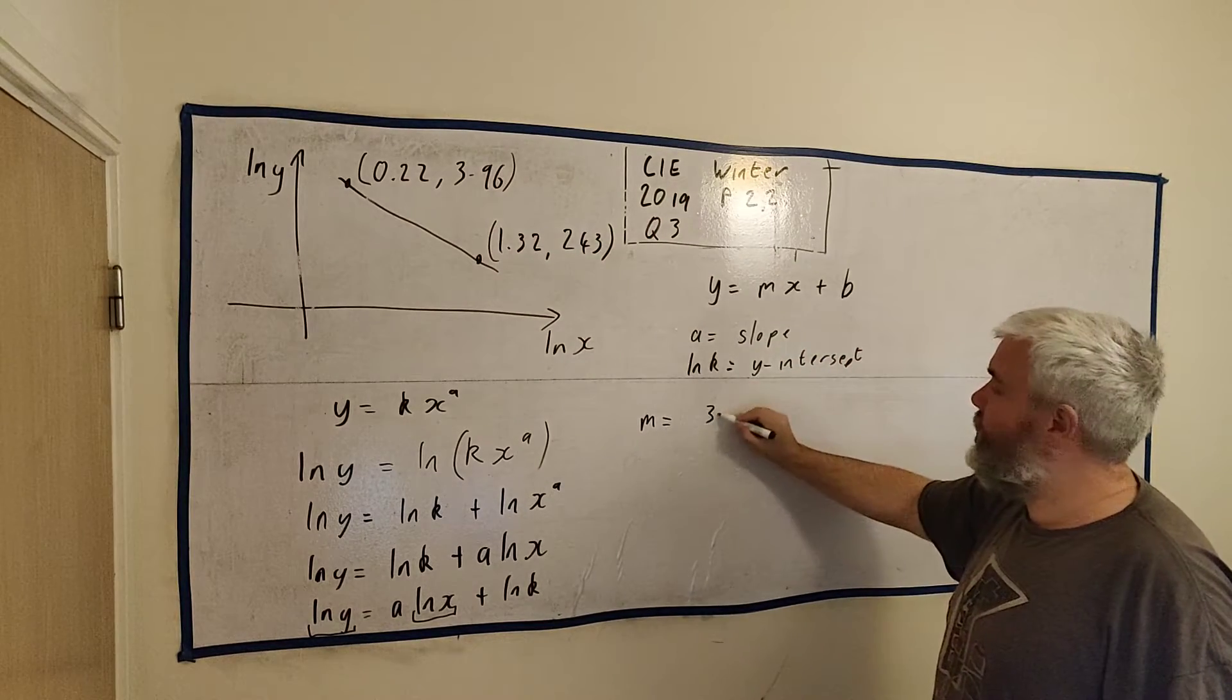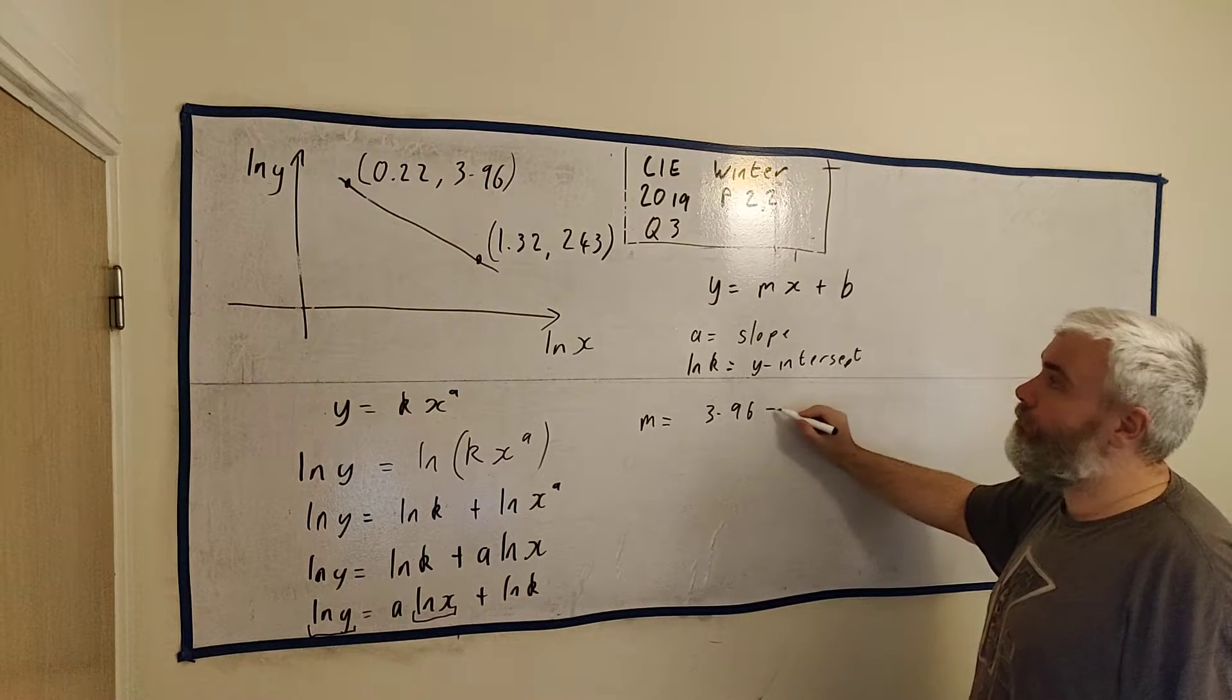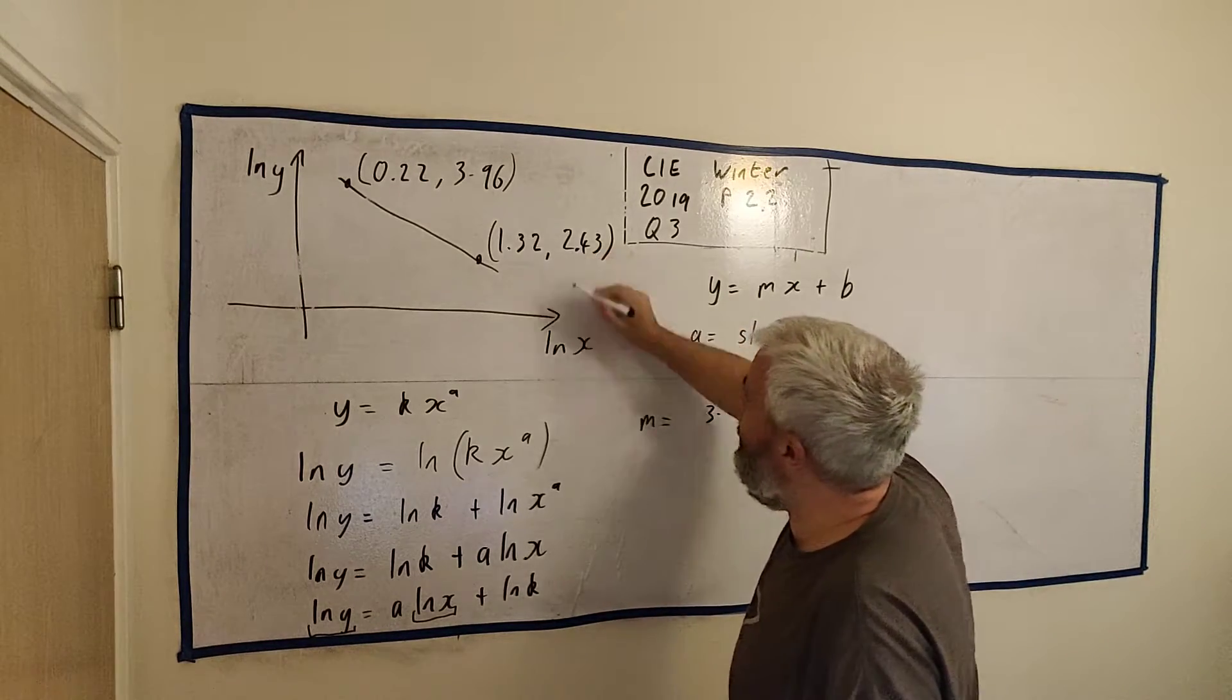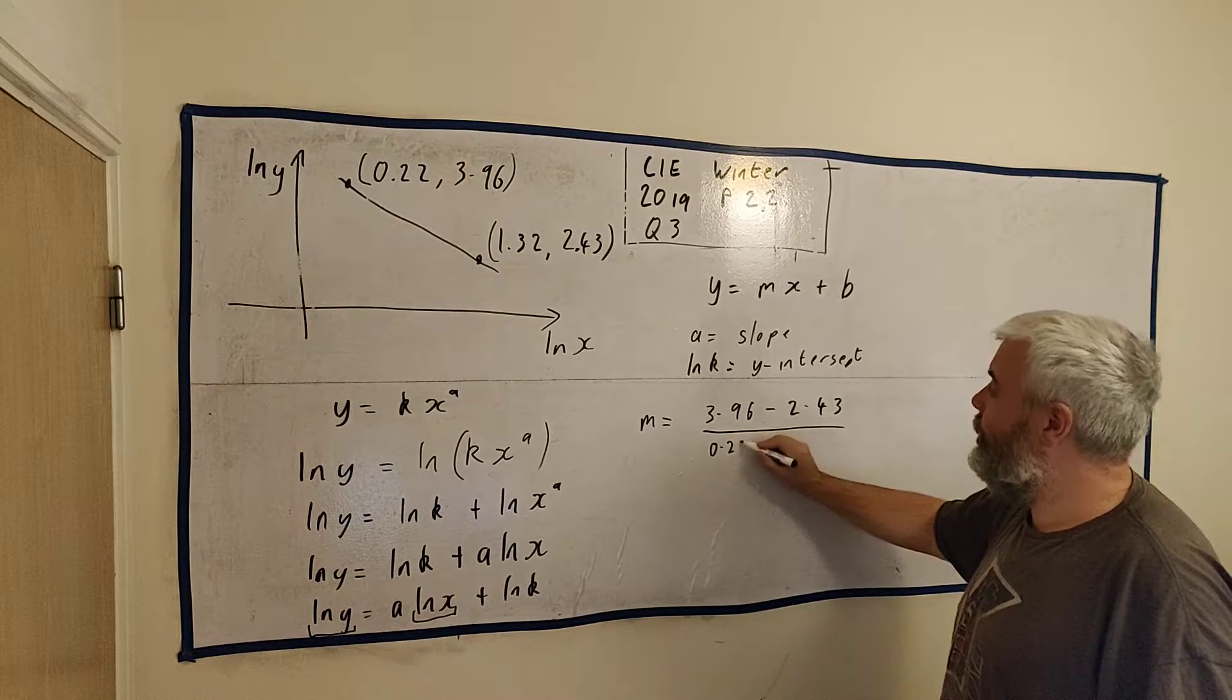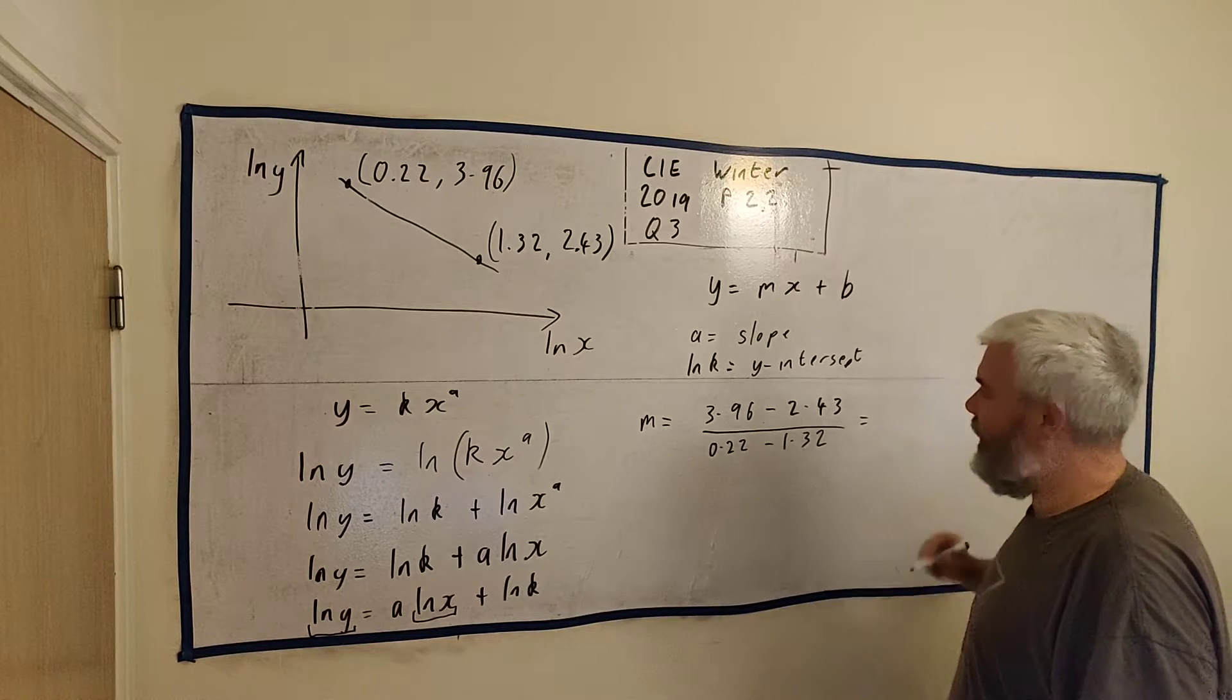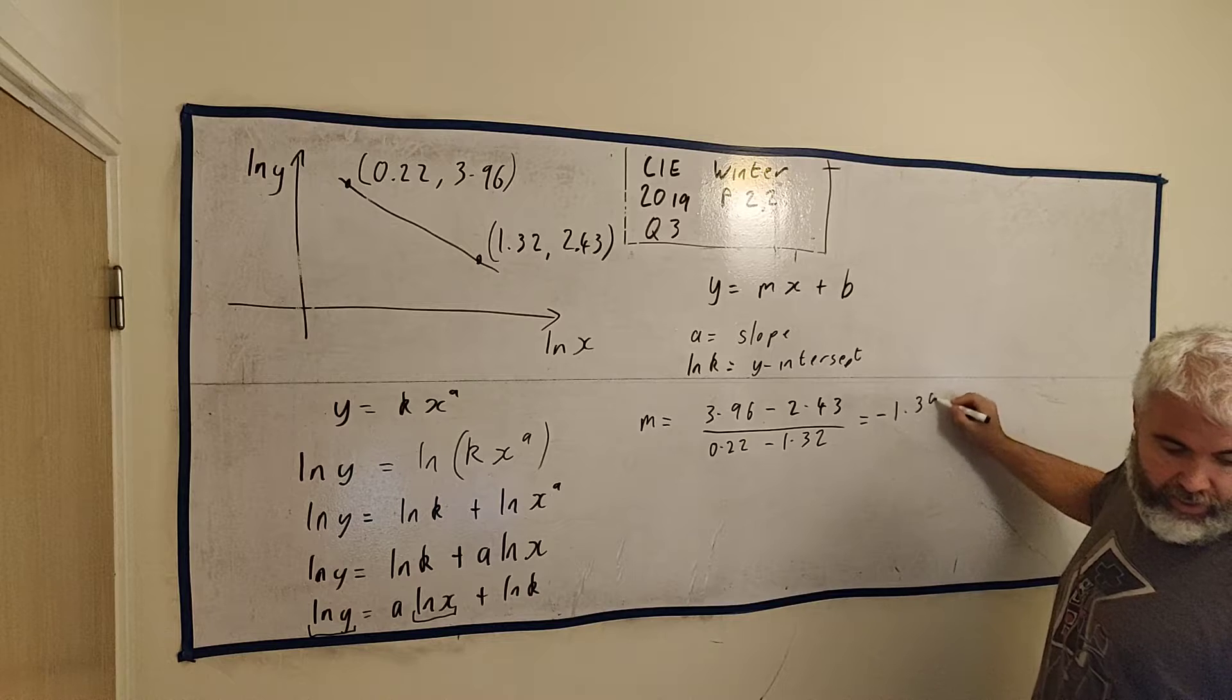pick whichever one we want. 3.96 minus 2.43, I'm missing a point there. So that's y2 minus y1, really either of the y's you want, divided by 0.22 minus 1.32. And that is all equal to minus 1.39.